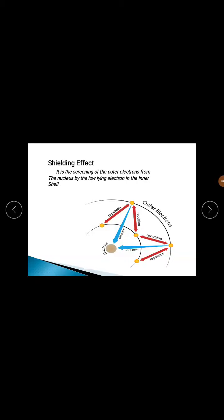So we will start the shielding effect. In this chapter, we will study that the atom has a nucleus at its center. Around the nucleus there are shells and orbitals. In the orbitals, electrons are present. In the nucleus, there are protons present.